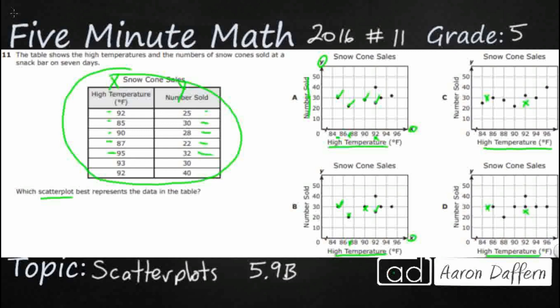Let's check 95, 32. There's my 95. 32 is right above 30. There we go. Let's check 93, 30. 93 is between 92 and 94, right on the 30 line and 92, 40. So here's, there we go.